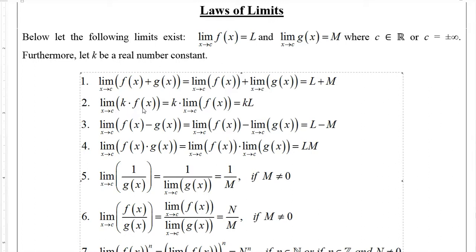The limit as x goes to c of a constant k times a function equals k times the limit of the function, which is k times L. The limit of f(x) minus g(x) gives the difference of the two limits. The limit of the product is the product of the limits. The limit of a reciprocal is the reciprocal of the limit, provided M is not zero — since one over zero is undefined. Similarly, the limit of a quotient is the quotient of the limits, provided the limit in the denominator is not zero.